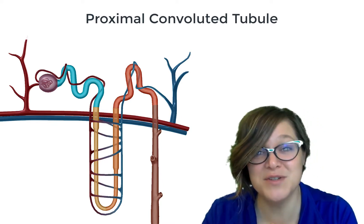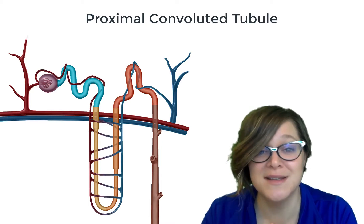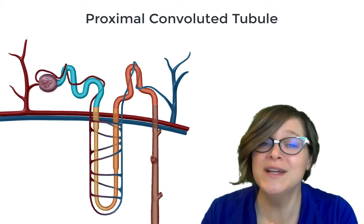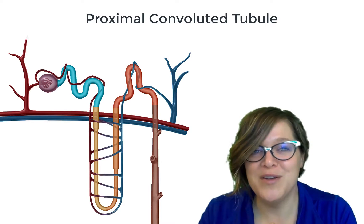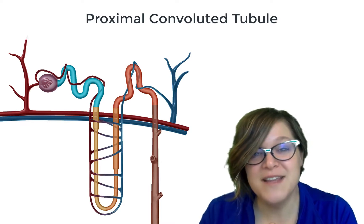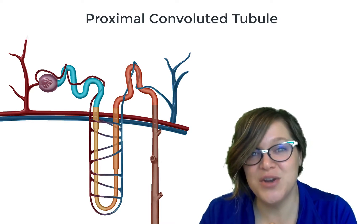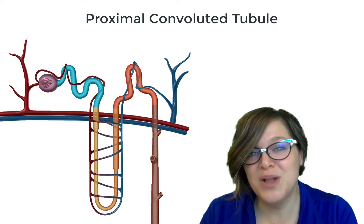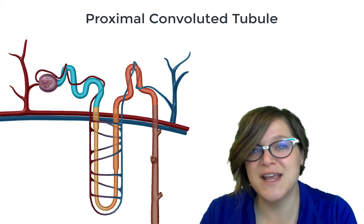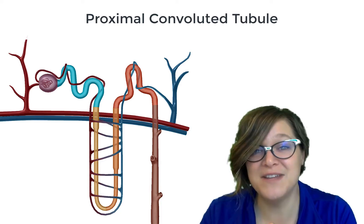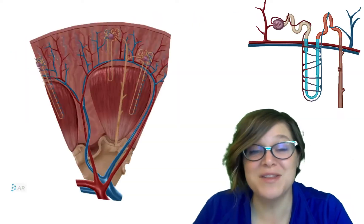From that proximal convoluted tubule, which by the way just means nearby twisty tube, we go down the loop of Henle. The loop of Henle is involved in concentrating urine. What it's going to do is it's going to pull out water and salts and by the end what's going to be left is waste. So when we talk about the loop of Henle, this is where it gets kind of complicated.